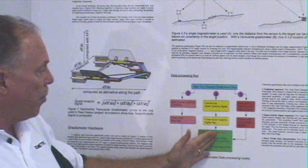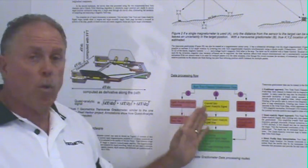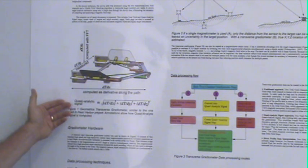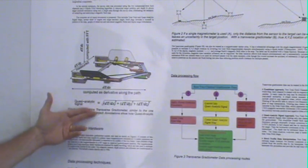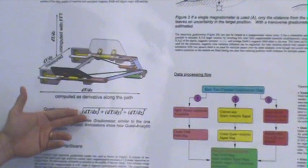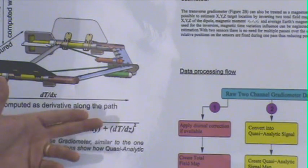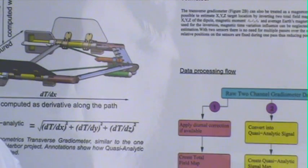We have a secondary data processing path which is to convert the data into a quasi-analytic signal. What does that mean? We have a definition of quasi-analytic signal here where we have the transverse gradient, the longitudinal gradient, and the vertical gradient. We square those values and take the square root.